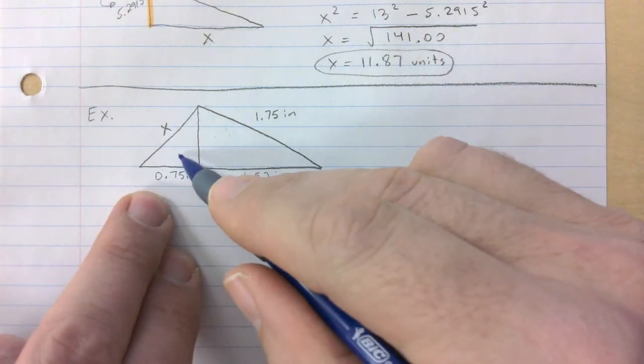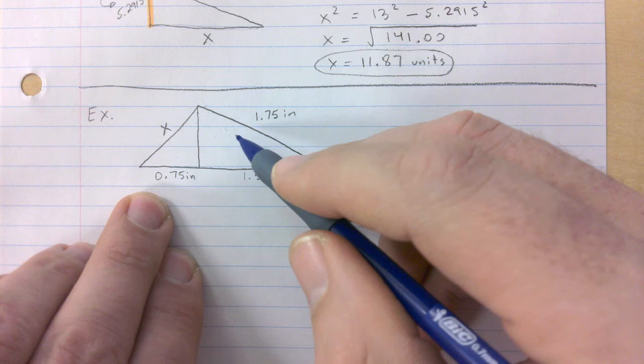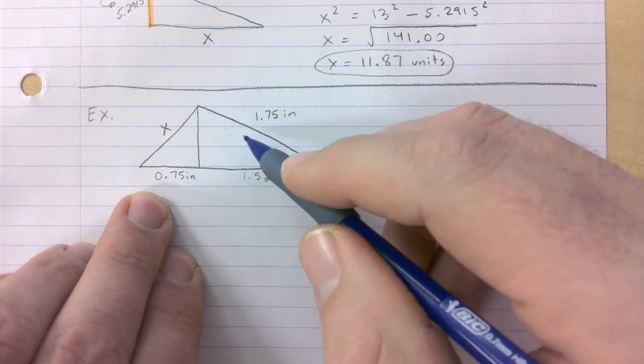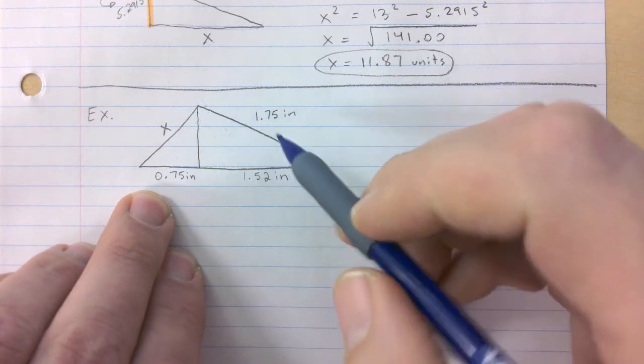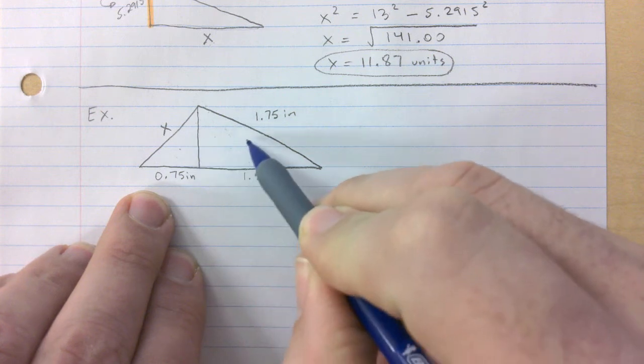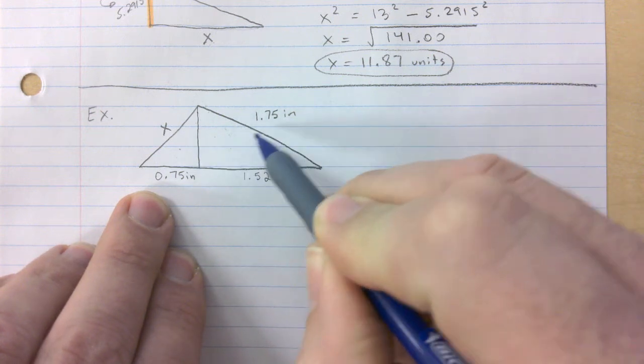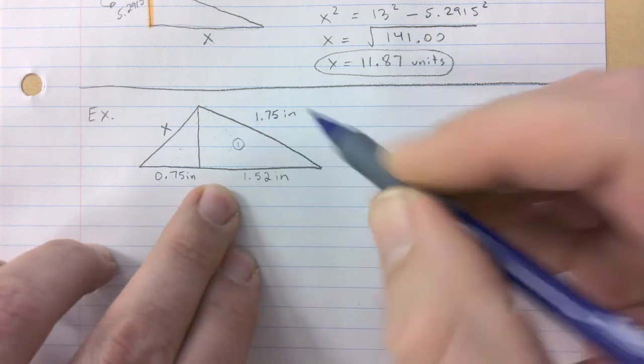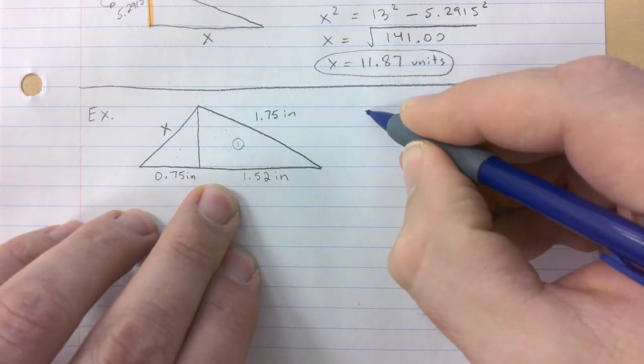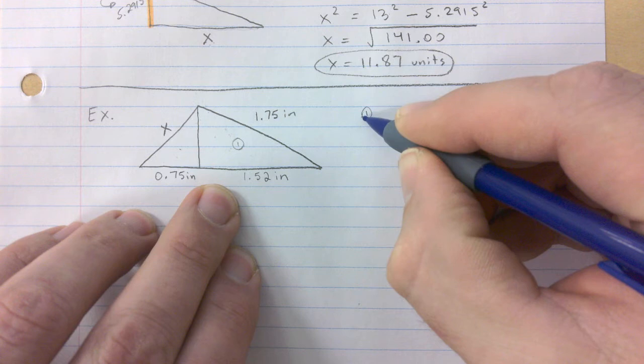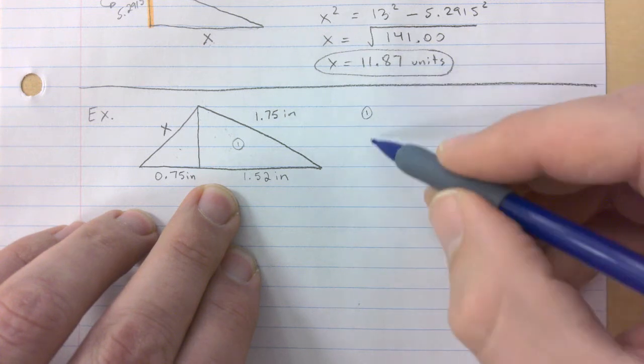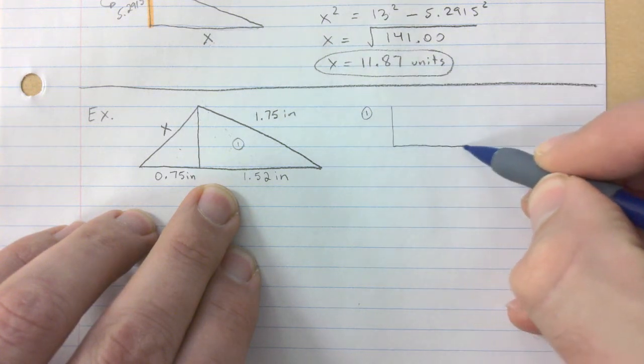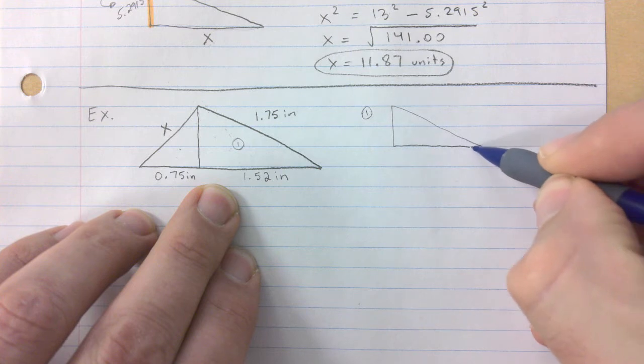Out of the two triangles, this is the one that you should be picking. So this is my number one here. To work with number one, if you want to sketch it or not, that's up to you. I would maybe recommend you do that so you know which one is which. This is 1.52, 1.75.